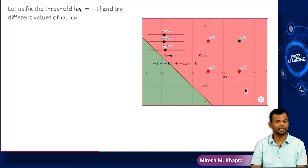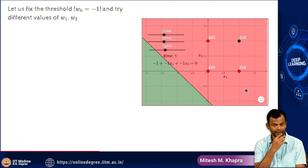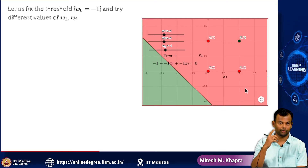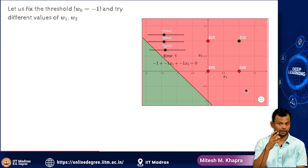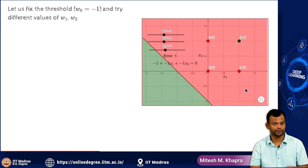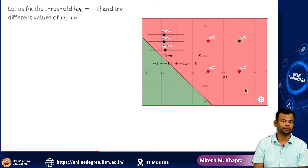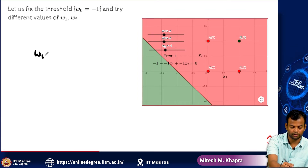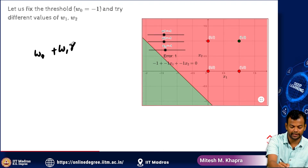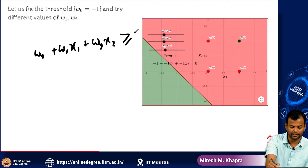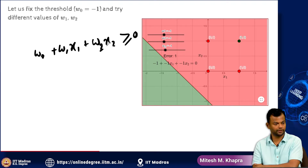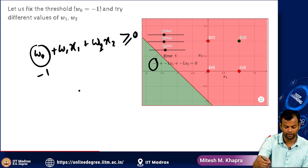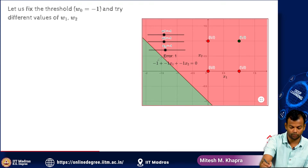So again this is the example we were dealing with. I am looking at the AND function now, and for the AND function the output should be 1 only for one input which is shown in green, and it should be 0 for the 3 red inputs — that is what the AND function is. My decision is w0 + w1*x1 + w2*x2 >= 0, then the output would be 1, otherwise it would be 0. Now let me fix w0 as minus 1.